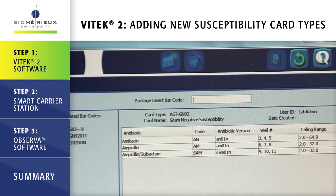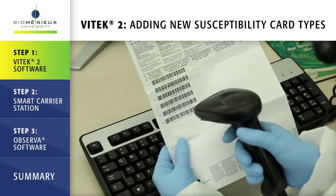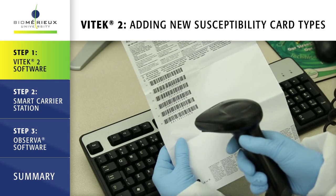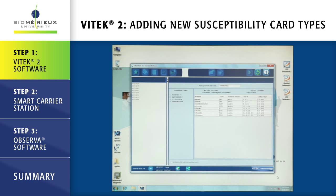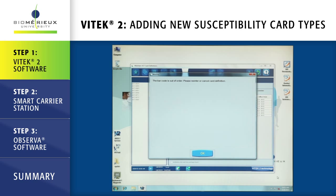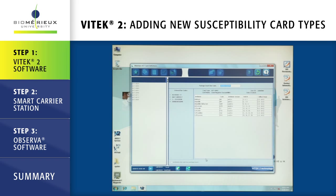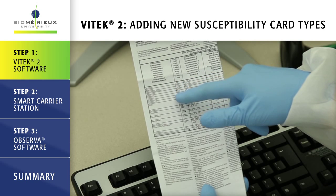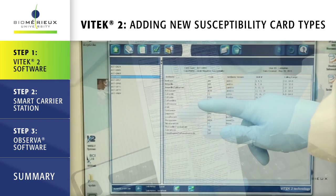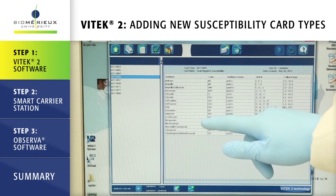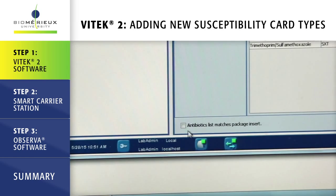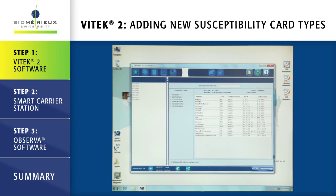sequentially scan each of the barcodes found on the back of the AST package insert. If a barcode is scanned out of order, an error message will display. Simply click OK to acknowledge the message and then scan the correct barcode. After the last barcode is entered, compare the antibiotics listed on the package insert to those listed in the Vitek 2 software. Click in the antibiotics list matches package insert box to confirm they match.